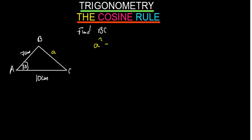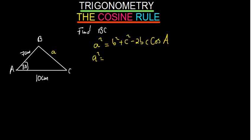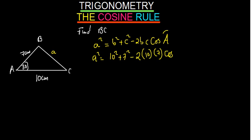So A squared is given by B squared plus C squared minus 2BC, and then cos — you started with A, so we are going to say cos of angle A. Now, small b is 10, so you square that: 10 squared. And small c is 7, so you square that: 7 squared. Then minus 2, B is 10, C is 7, and then cos A. The angle A is 30 degrees.